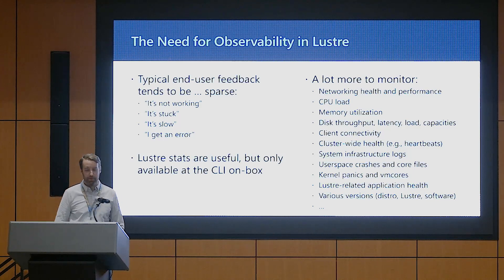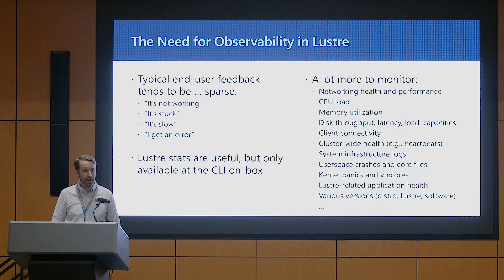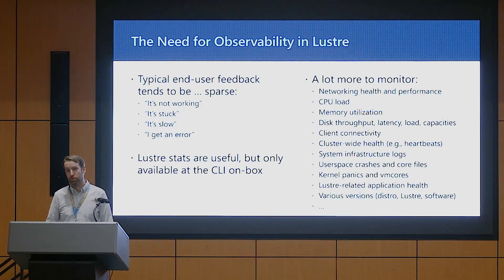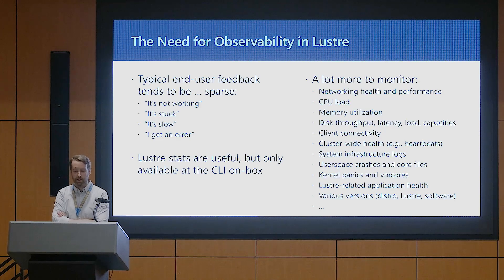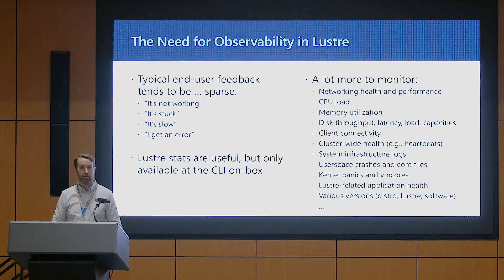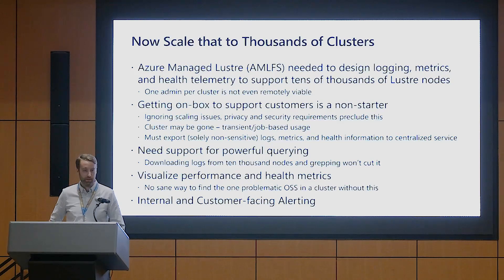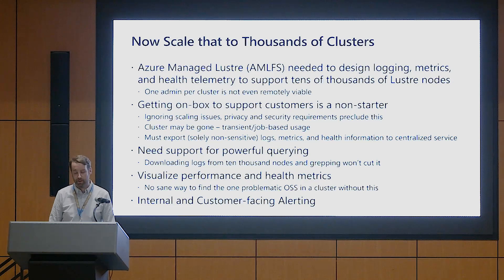The deep need for observability is probably something everybody knows about. End users tend to give fairly sparse feedback on what's going wrong. And while Lustre stats are really useful, they're only available at the command line on-box, which is pretty much a no-no for us in the cloud. We need a lot more than just those stats — we need to monitor networking, CPU loads, memory, disk, the list goes on. We have a very broad range of things to track to keep systems in a healthy state. That need is shared whether you're on-prem or in the cloud; it's just a nastier issue of scale in the cloud.